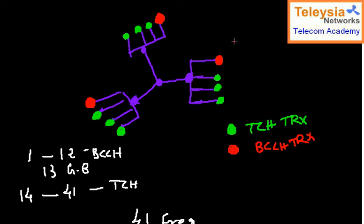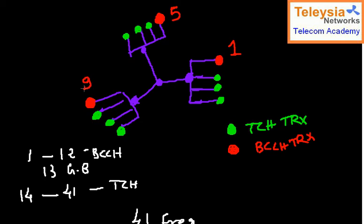We have only one cell site here, so no need to worry too much. As described in the previous chapter, we must avoid co-channel and adjacent channel interference. I put frequency number 1 here — I cannot put 2 because that would be adjacent channel, and I cannot reuse 1 either. Keeping distance is important, so let's use 5 here and 9 here. We've used three frequencies out of 12.